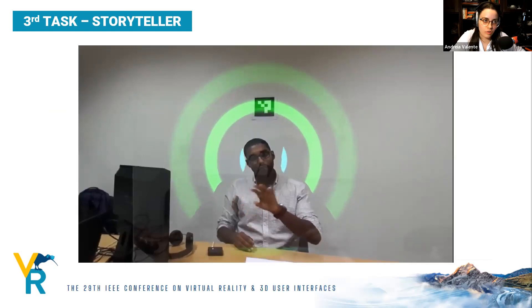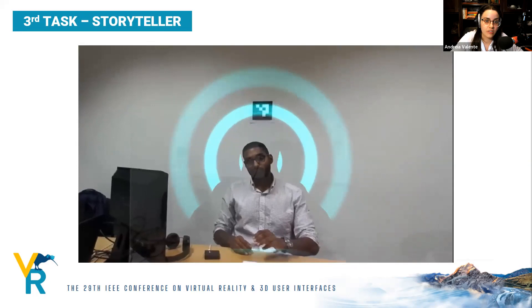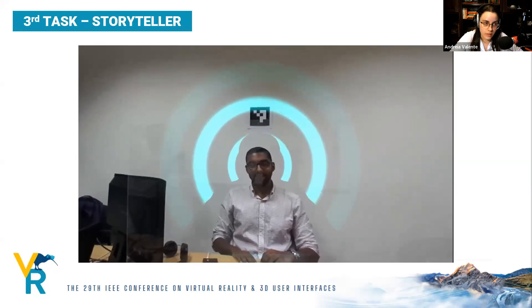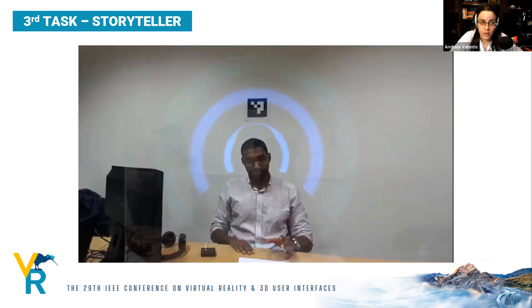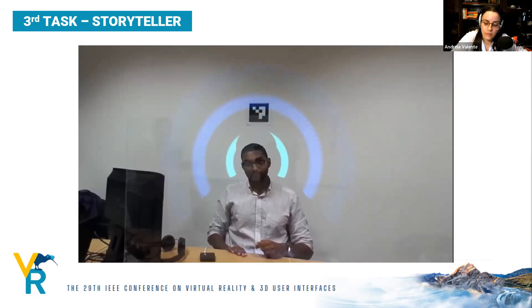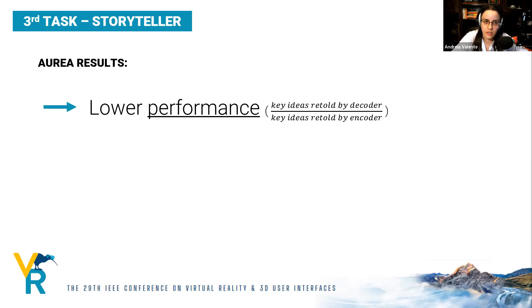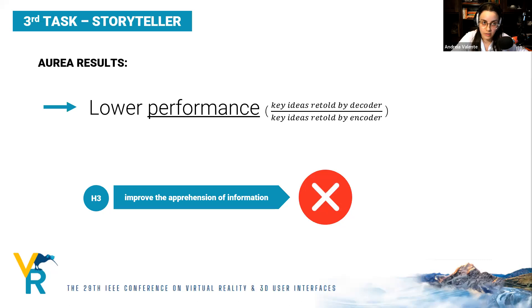In the third and last task, the encoder watched a video and retold the events to their partner in as much detail as possible. Their partner then retold the events using only what was given. Each video had around 60 key ideas. We wanted to know if higher emotional understanding would lead to better information apprehension — and it did not. Performance with the system was significantly lower, with participants reporting the ripple effect was more distracting than helpful. We rejected our third hypothesis of improved information apprehension.